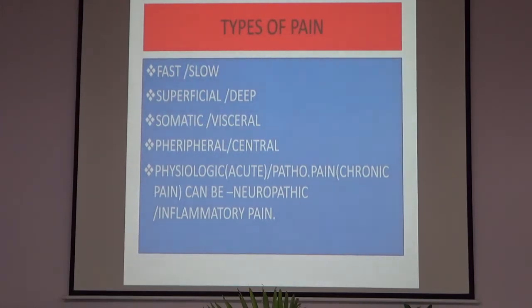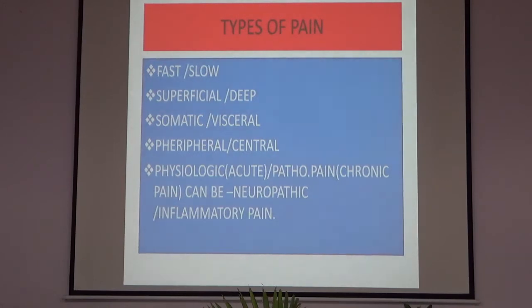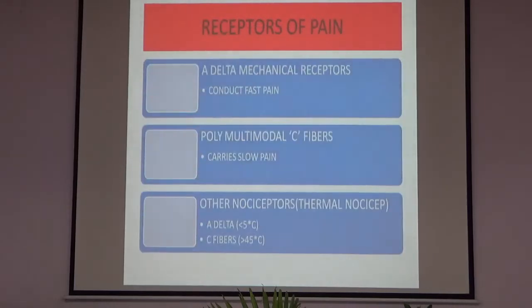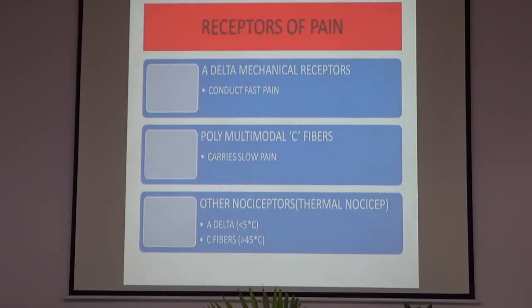The stimulus that elicits pain is called a nociceptive or noxious stimulus. You will hear this term again and again in coming classes. The receptors of pain are called nociceptors, which are actually the free nerve endings. There are three categories: A-delta mechanical receptors which conduct fast pain, polymodal C fibers which carry slow pain, and thermal nociceptors which include both A-delta and C fibers.